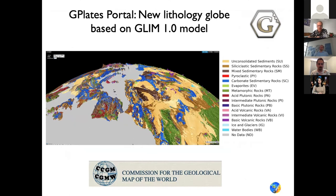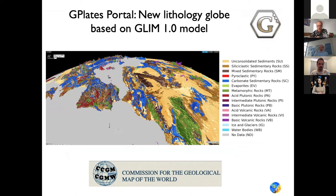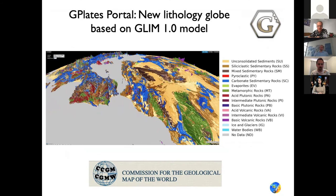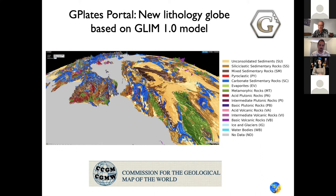We've recently added a globe to the G-Plates portal that's quite useful for Basin Genesis Hub purposes. It's a lithology globe based on the GLIM 1.0 model published by the Commission for the Geological Map of the World. A digital dataset for this map is available, with all lithologies visualized overlaying a digital elevation model that can be scaled by the user — useful as a first reference for setting up basin models driven by different erodibilities associated with different lithologies.